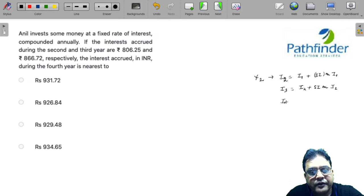And in general, interest earned in the nth year will be equal to interest earned in n minus 1th year plus simple interest on interest earned in n minus 1th year, where I is the interest earned.